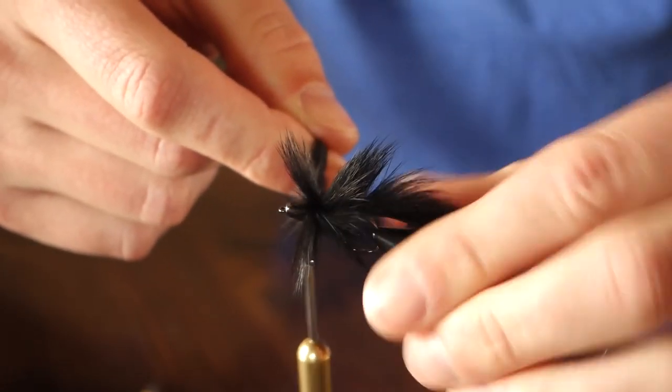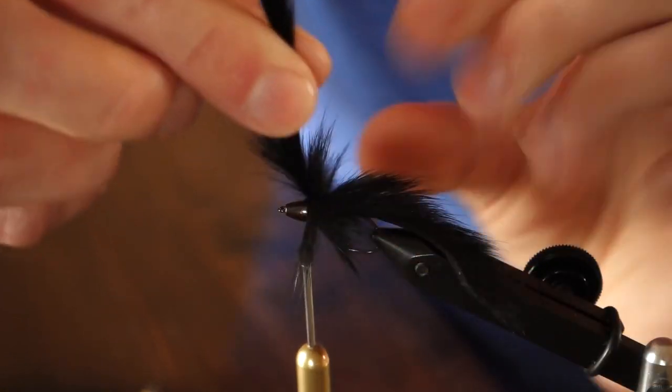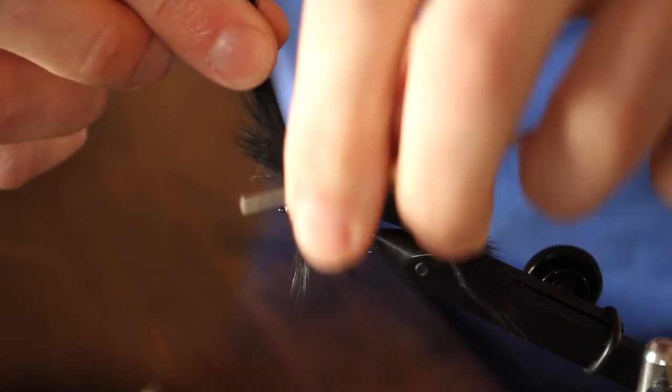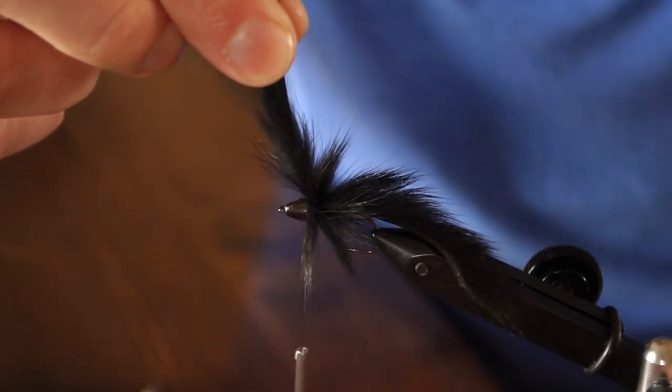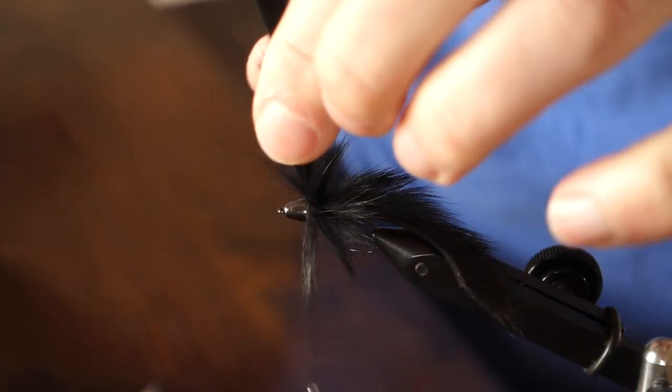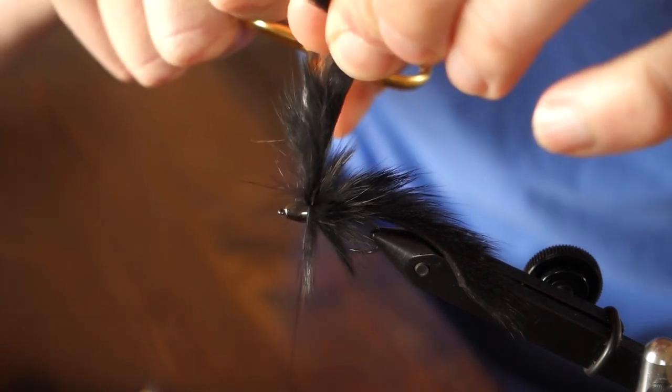I can make about two wraps, two and a half wraps, get a nice thick collar. This is what's going to help push that water and really grab the attention of the fish. Once I've got about two and a half wraps, go ahead and secure this off with three tight wraps and clip off the excess.